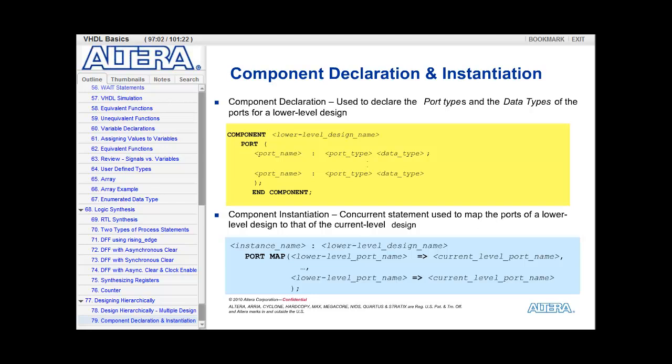This slide shows how to do a component declaration and instantiation. For a component declaration, you use the keyword component, followed by the name of the lower-level file you want to instantiate, followed by the keyword port. Then in parentheses, you list the name of the ports, colon, their direction, and their data type. You end your component declaration with the keyword end component. Many times, the easy way to do a component declaration is to just copy the entity declaration from the lower-level block, paste it into your architecture declaration section, change entity to component, and get rid of the is.